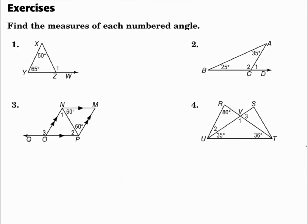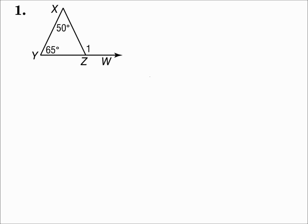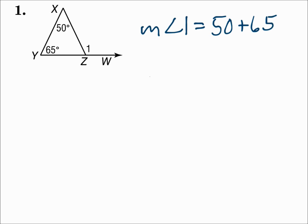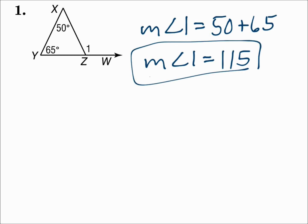Find the measures of each numbered angle. For number one, angle one is an exterior angle — you extend a side and the angle formed is the exterior angle. The 50-degree angle and the 65-degree angle are remote interior angles; they're not adjacent to angle one. The exterior angle is the sum of the remote interior angles, so the measure of angle one is 50 plus 65, which equals 115.